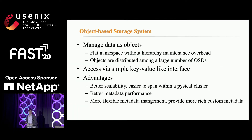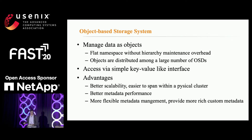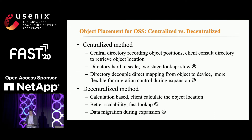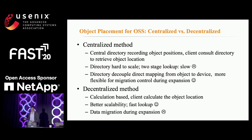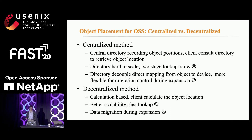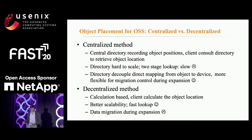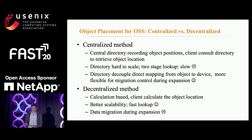To start with the background, object-based storage systems have been widely used for various scenarios, such as distributed file storage and remote block storage. Compared to file system-based storage, object-based storage systems simplify the data layouts by exposing an interface for reading and writing objects via unique object names, thus reducing management complexity at the back end. Objects are placed among a large number of object storage devices, termed OSDs, following centralized or decentralized placement methods. Centralized methods use a central directory to record object positions, which avoids direct mapping from objects to device and is more flexible for migration control during expansion.